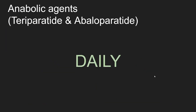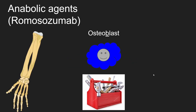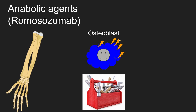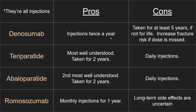One thing that's unfortunate is that teriparatide and abaloparatide need to be injected daily, compared to our next medication, romosozumab, which is injected monthly. Romosozumab increases osteoblast activity — there are chemicals in the body that decrease osteoblast activity, and romosozumab comes in and prevents that from happening. I want to note that since romosozumab was FDA approved two years ago, its long-term side effects are uncertain.